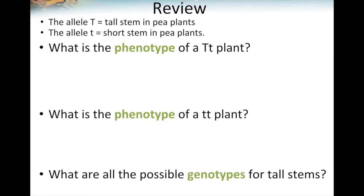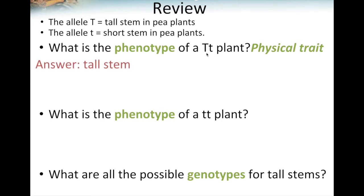Before we answer the first question, remember that phenotype means the physical trait. So what is the physical trait of that plant — will it have tall stems or short stems? Because the genotype is heterozygous, meaning two different alleles with one capital and one lowercase, it's going to represent tall stem. Why? Because of that capital letter. That capital letter represents tall stem and it's the dominant trait. All you need is one capital letter, and it represents tall stem.